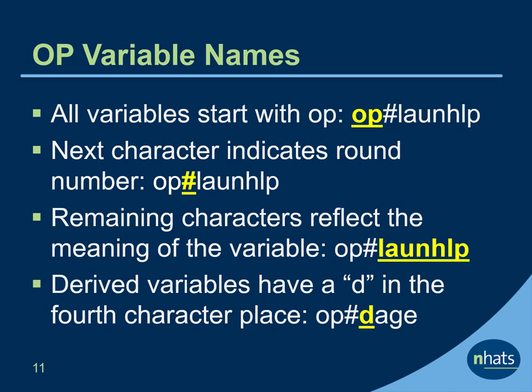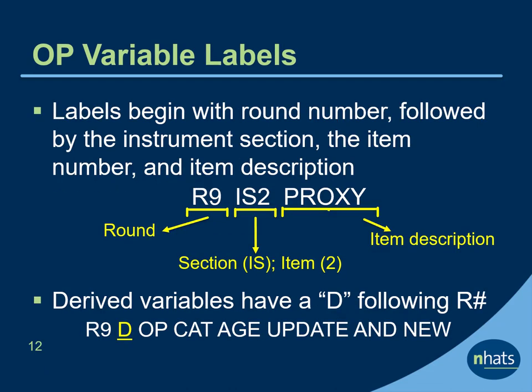NHATS also creates variables referred to as derived variables. These will always have a D in the variable name after the survey round. The corresponding labels for each of the OP variables also follow general principles in NHATS. Labels begin with round number, followed by the instrument section and item number, and finally the item description. Just like in the variable name, the label will also clarify that the variable is derived.